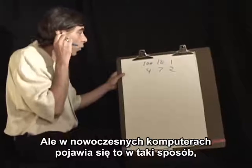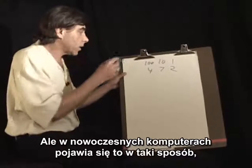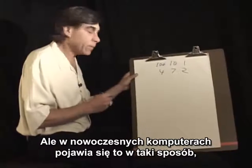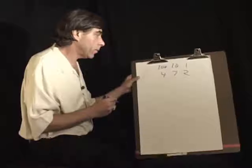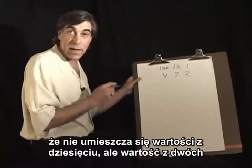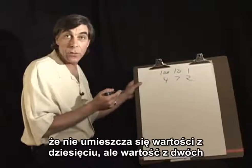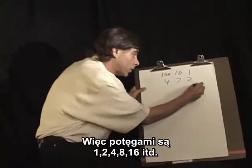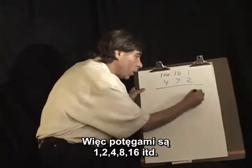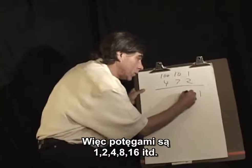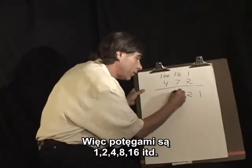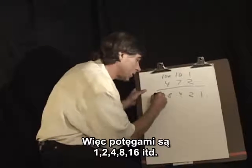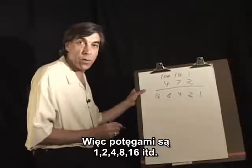But the way this occurs in modern computers is not place-ten value, but place-two value. So the powers are ones, twos, fours, eights, sixteens, and so forth.